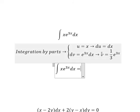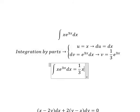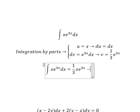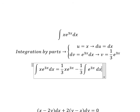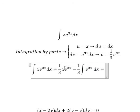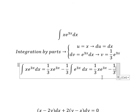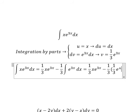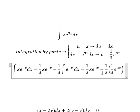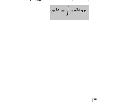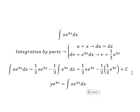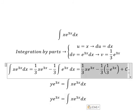So we have u equal to x. Using the formula u·v minus the integral of v·du, the result of this integral is 1 over 3 e to the power of 3x, and we add the constant c. So we return back to the equation, and we know that this side equals the other side.